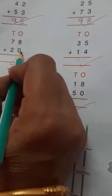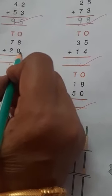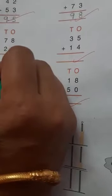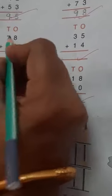78 and 20. The number on the ones place is 8 and 0. Zero has no value, so 8 plus 0 is 8. We will write 8 here.